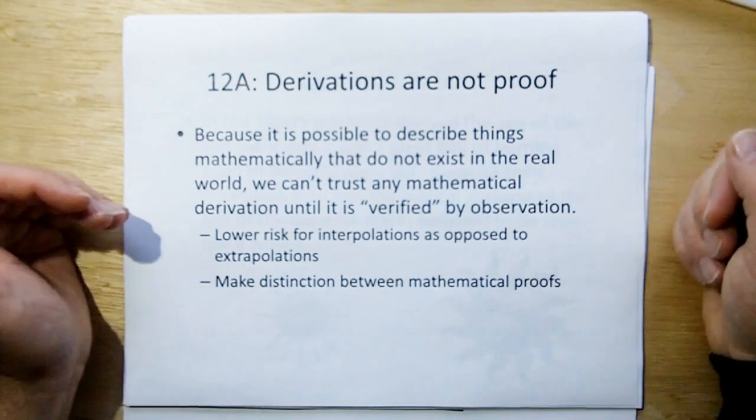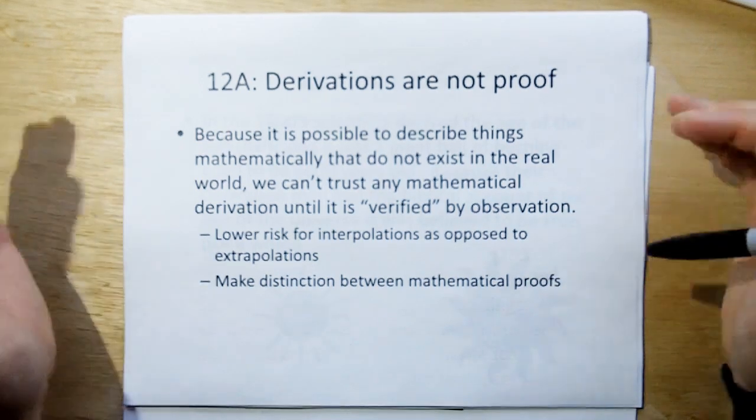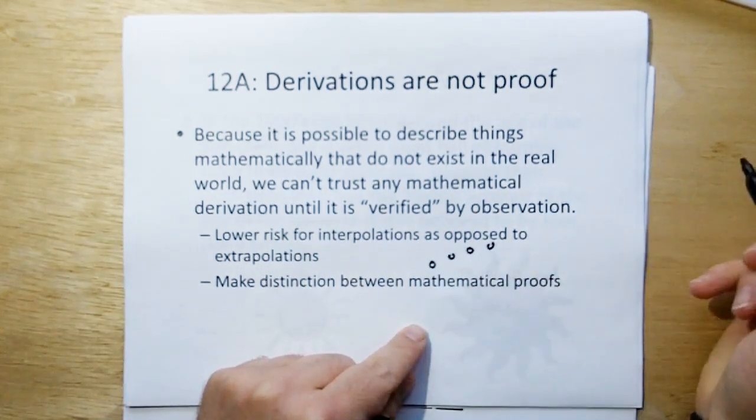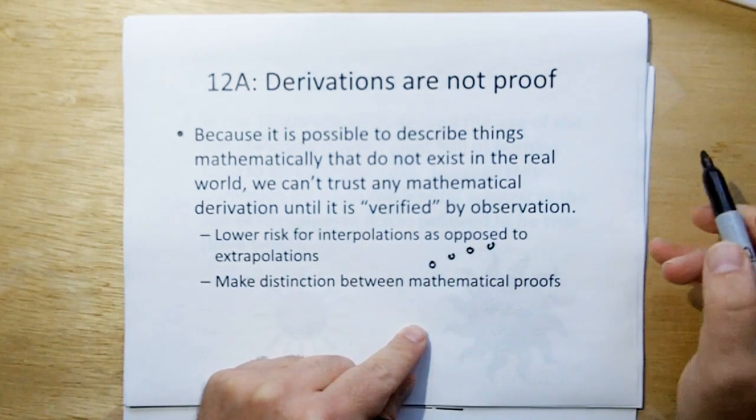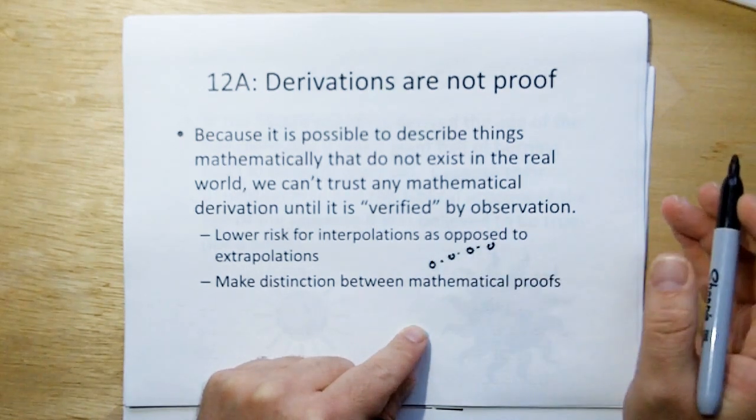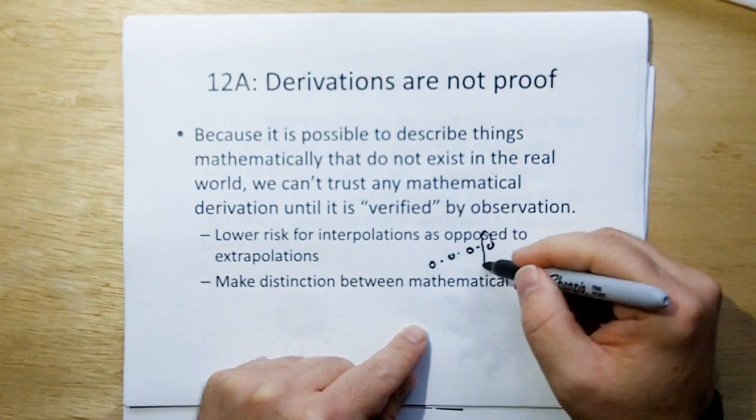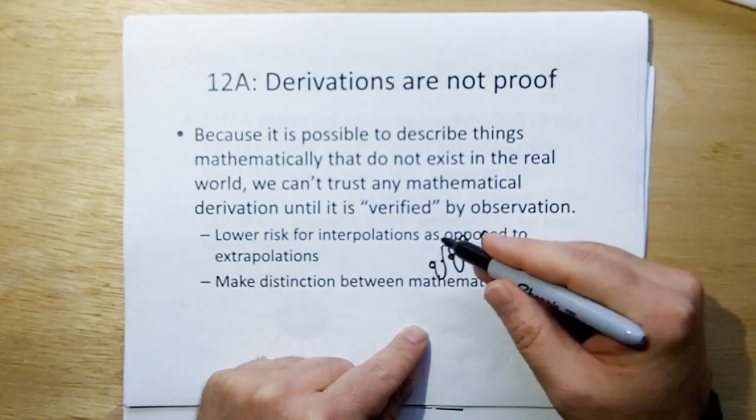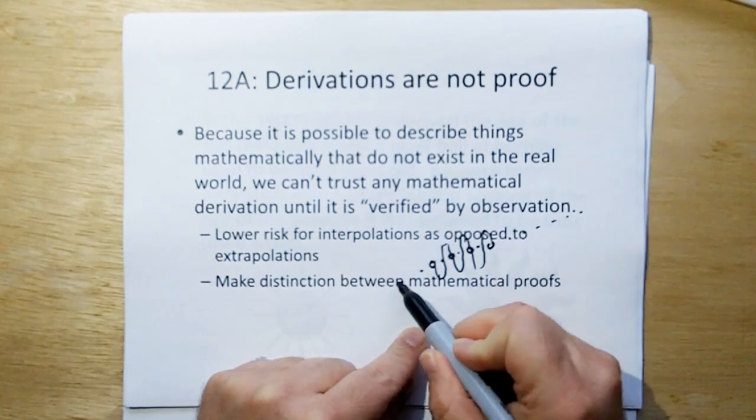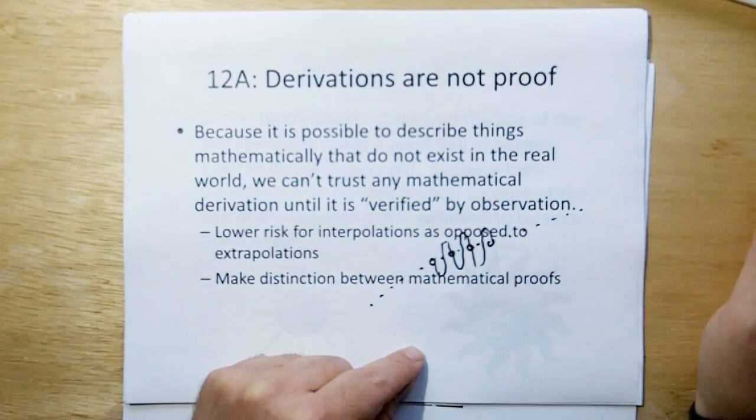Now, there are lower risks for interpolation as opposed to extrapolation. So, if you have measured data like this, then if you look to the points in between where you measured, you're probably going to be pretty good that you're going to get the right answer. Unless nature's doing something like this to you. But on the other hand, if you're trying to extrapolate beyond your measured data, that's what extrapolation is, things are a little more problematic.